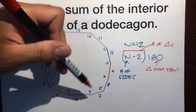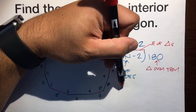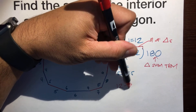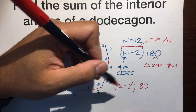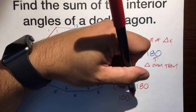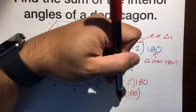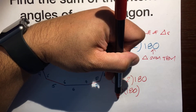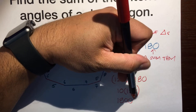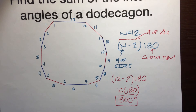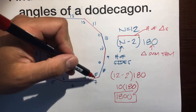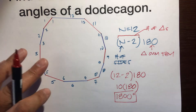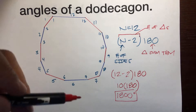Our n is 12 for this dodecagon. Let's plug it into the formula: 12 minus 2 is 10 times 180 degrees, giving us a grand total of 1,800 degrees. Because 10 triangles fit inside, so 10 times 180 degrees equals 1,800 degrees total. So the sum of all 12 angles adds up to 1,800.